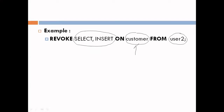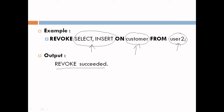The owner of the table 'customer' takes the SELECT and INSERT privileges from user2. By this way we can deny permissions to any user. Whenever we execute this statement, it displays an output: 'Revoke succeeded.' Now let's see a practical demonstration of the REVOKE command.